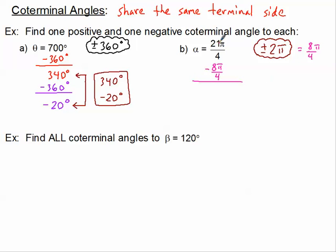So if I subtract here, 21π over 4 take away 8π over 4, I've got 13π over 4. So there's a coterminal angle. Let's keep going because I eventually need to get to a negative one. So I'm going to subtract 8π over 4 again, and now 13π over 4 minus 8π over 4 is now 5π over 4. Okay, another positive one.